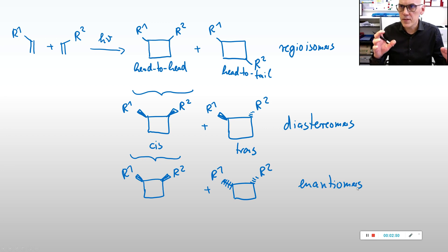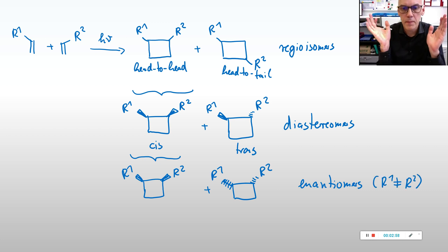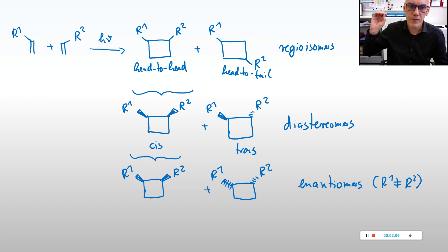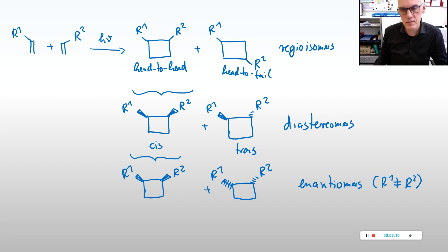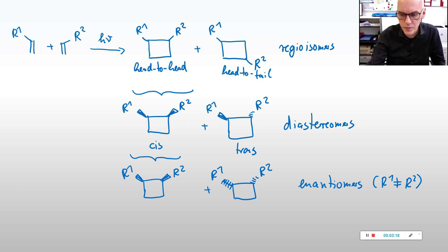This means, in this simple reaction with the two shown substrates — and R1 has to be unequal to R2 in order to have enantiomers — you can have two regioisomers, each regioisomer can form two diastereomers, and each diastereomer can form two enantiomers. But you want to get a single regioisomer, a single diastereomer, and a single enantiomer. How do you do this?